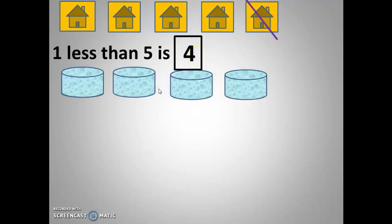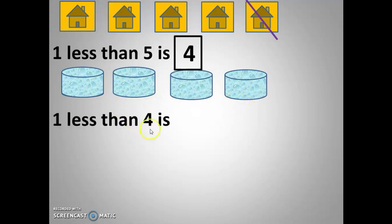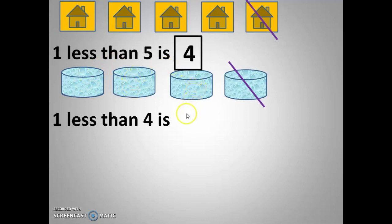Next: water tubs — we have four water tubs. The question is one less than four. Shall we cut one? Yes. If you cut one, before four it will be three. Let's check: one, two, three — yes, our answer is three.